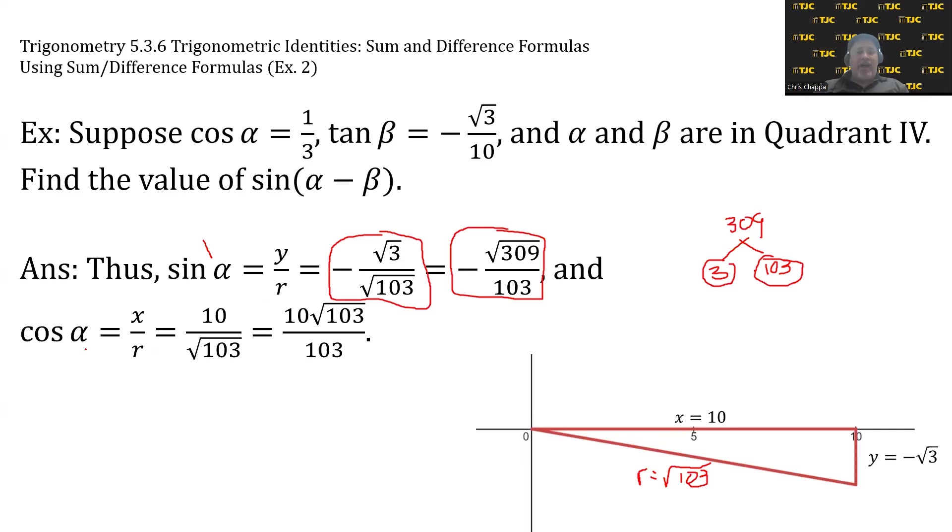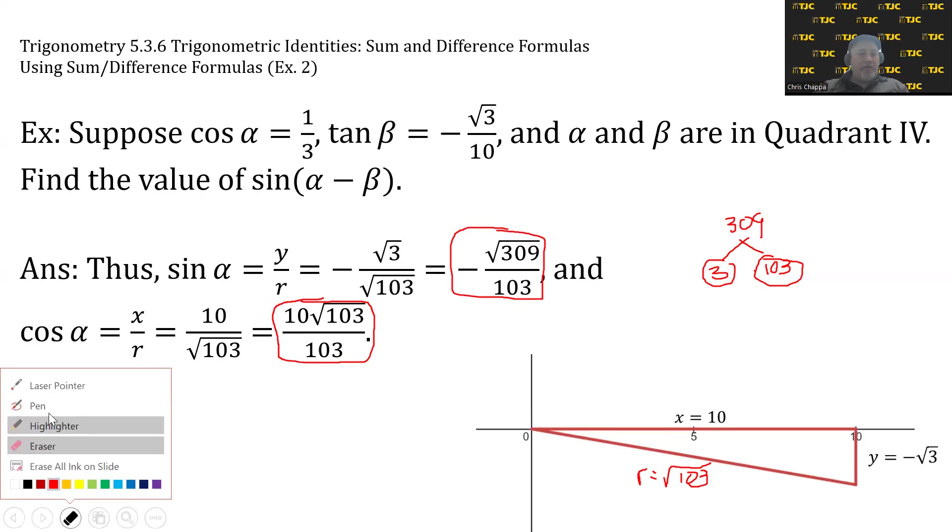For cos β, we have x/r - that's 10/√103. After rationalizing the denominator, that ends up being 10√103/103.